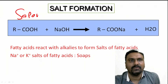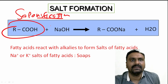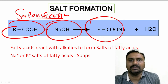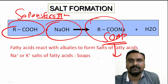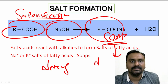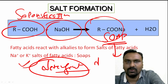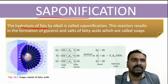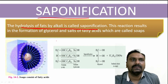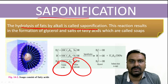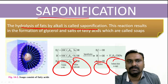The second property is saponification. Here, fats react with an alkaline medium to form the sodium and potassium salts of the fatty acids, which are called soaps, and which act as a detergent used in washing utensils or clothes. So saponification means hydrolysis of fats by the alkali. You can see here these fats react with sodium hydroxide to form glycerol and soap.